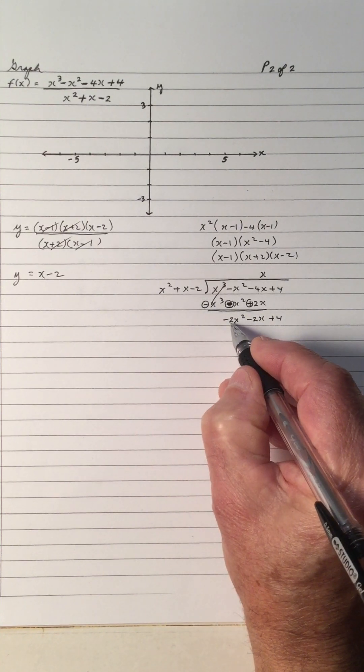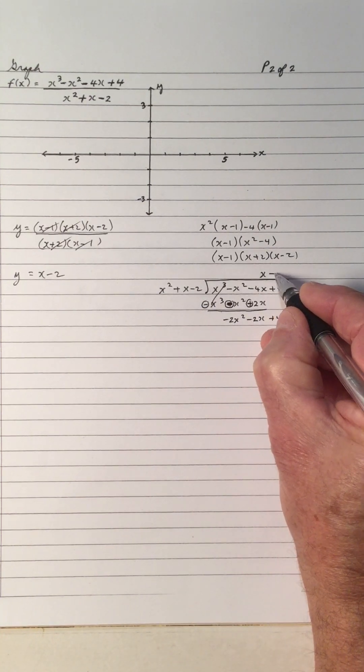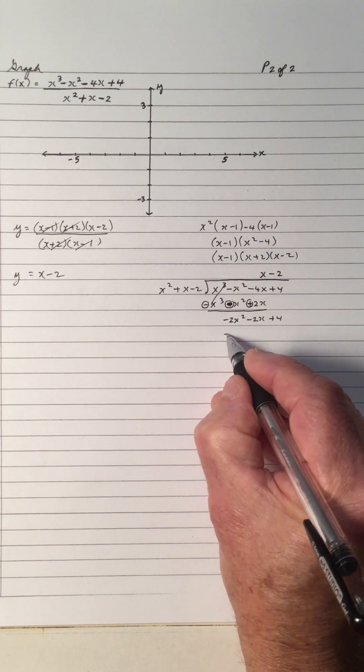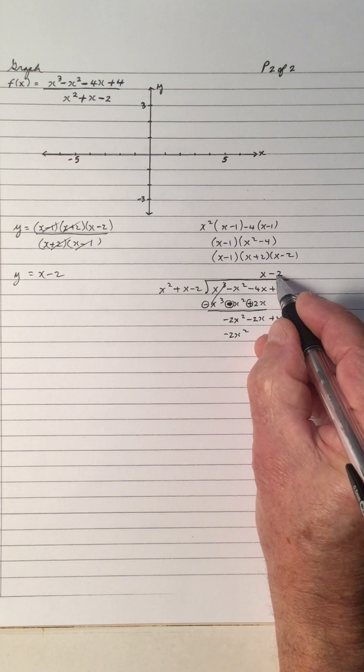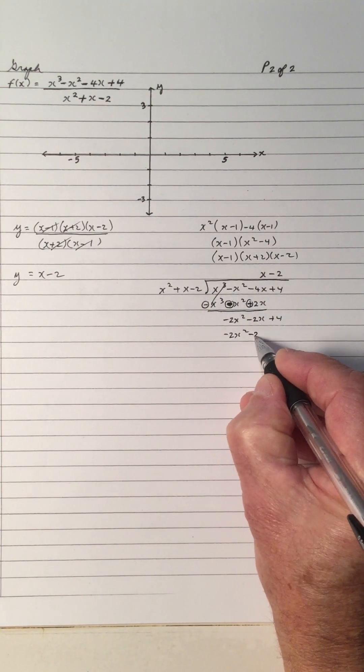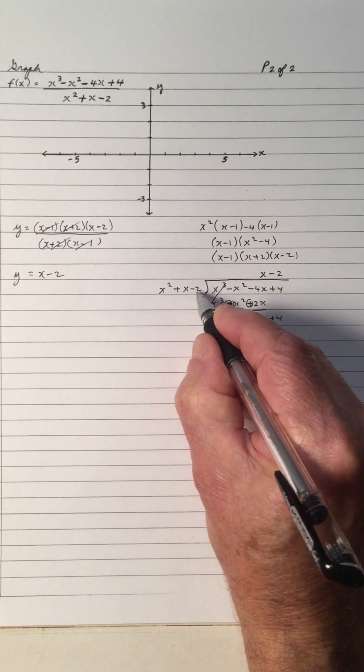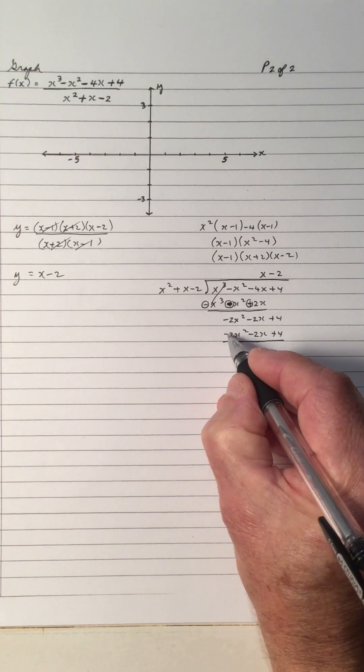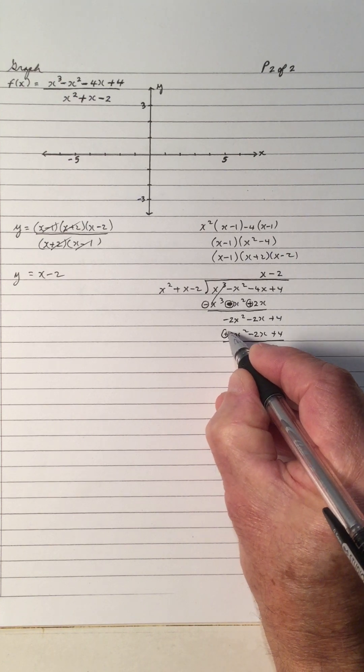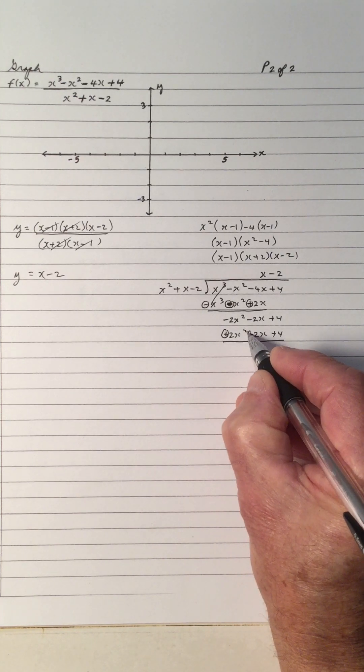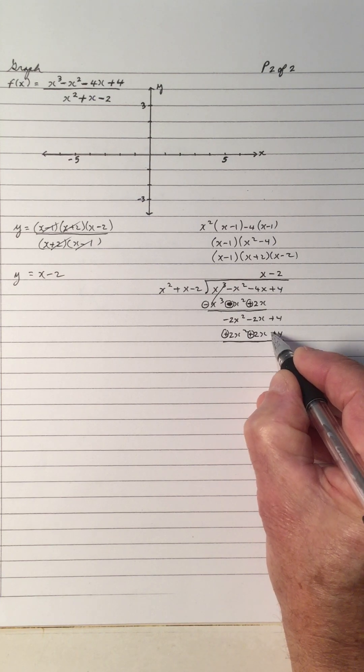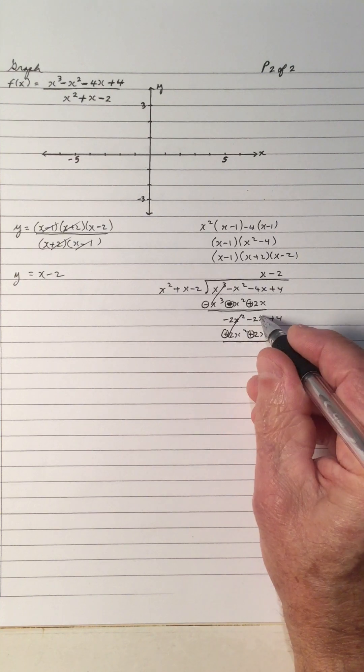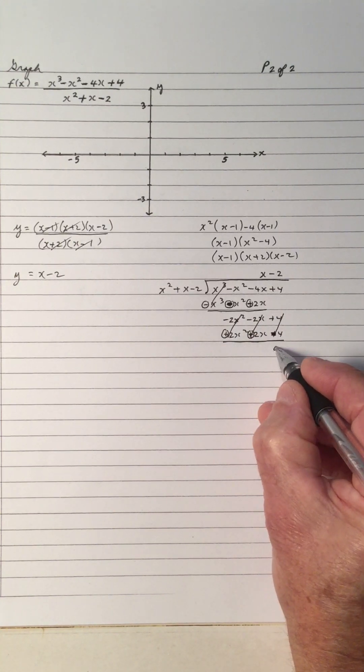So x squared divided into negative 2x squared is negative 2. Multiply back. x squared times negative 2 is negative 2x squared. Negative 2 times positive 1 is negative 2x. Negative 2 times negative 2 is plus 4. And we're subtracting, so we make this a plus, we make this a plus, and that's a plus, so we make it a minus. So add them up. Cancels, cancels, cancels. So there's a zero remainder.